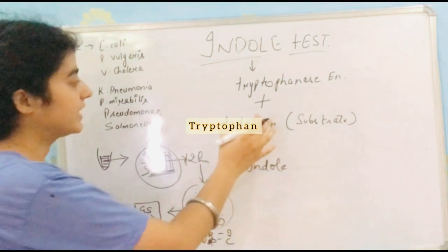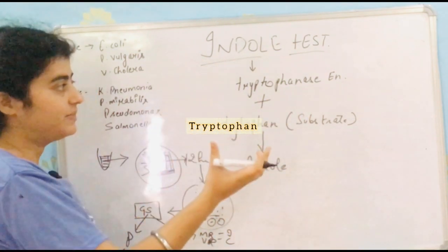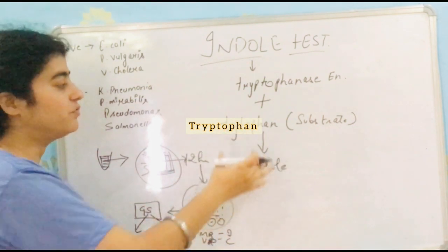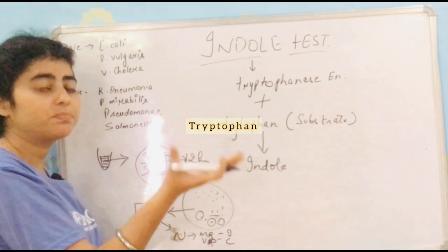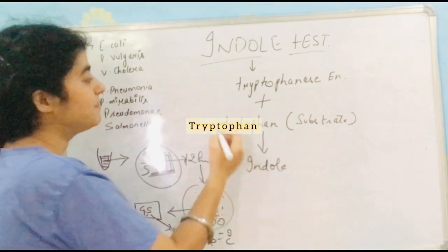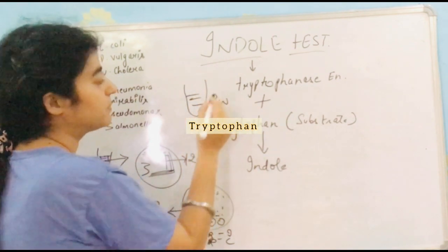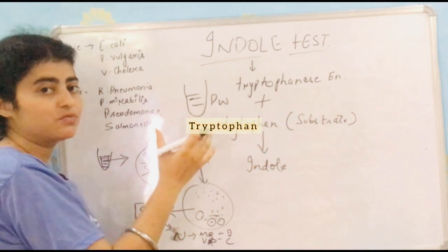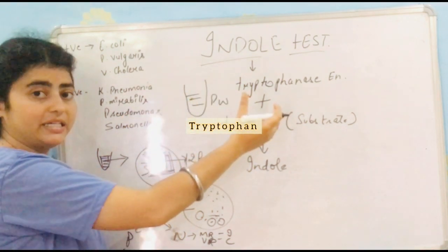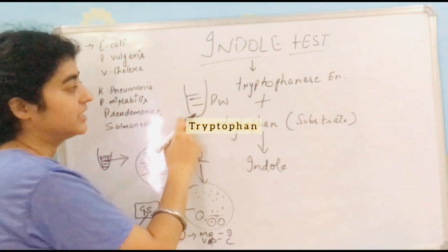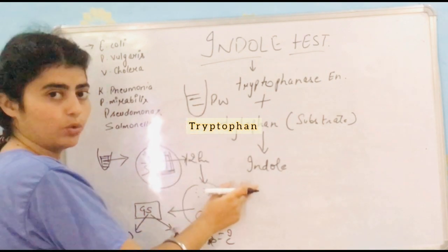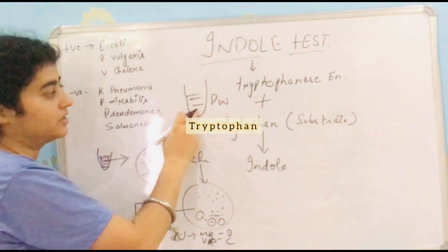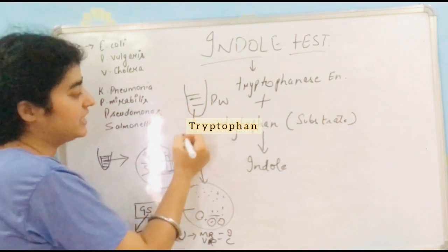We have a colony and we don't know whether it produces tryptophanase or not. We need tryptophan, which is present in peptone water. Peptone water is rich in tryptophan. We pick up colonies from the petri plate and drop them into the peptone water. The bacteria grow and convert the tryptophan in the peptone water into indole. We then incubate it for 12 hours.